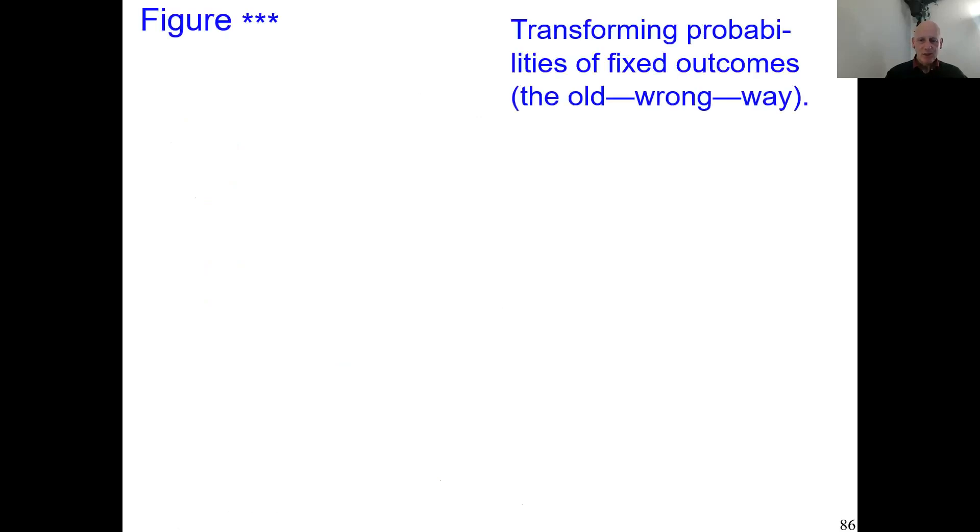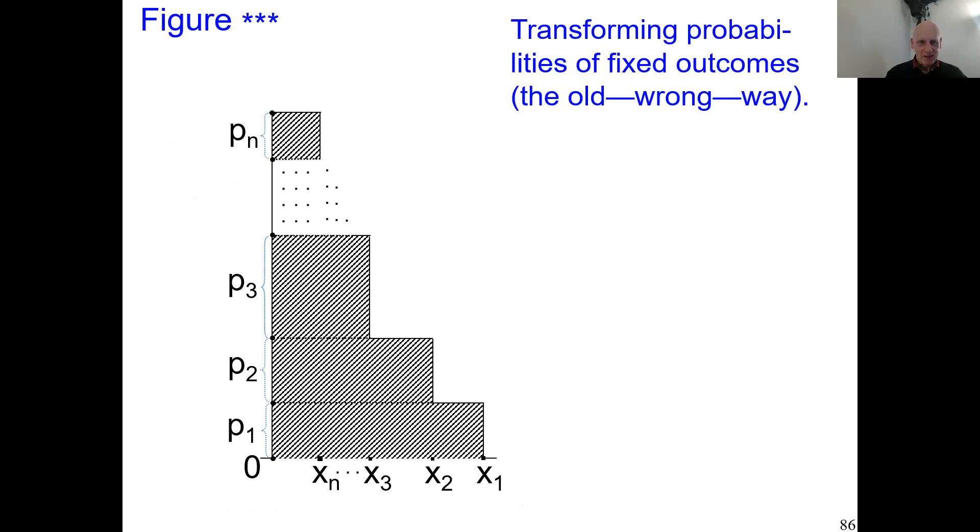Here comes a figure of the theory that psychologists like—this transformation of probabilities, which I'm going to argue is wrong. You already saw that this is also a way to depict the expected value of the lottery. I just rotated and flipped it.